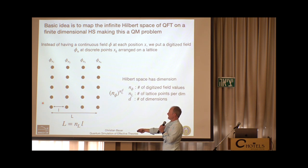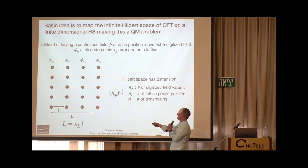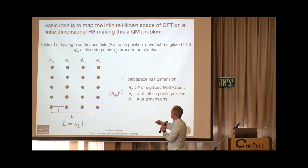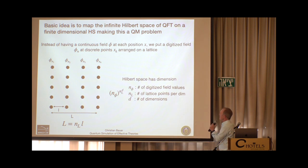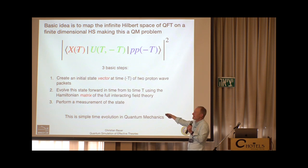The total lattice size L equals the number of lattice sites per dimension times the spacing l. The Hilbert space dimension is the number of field values per lattice site raised to the number of lattice sites, where the number of lattice sites is n_l — lattice sites per dimension — raised to the power of the number of dimensions. Once we have this finite Hilbert space, the problem seems simple: create an initial state vector, evolve it forward by matrix multiplication, and take the inner product.